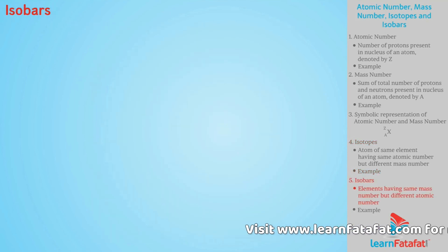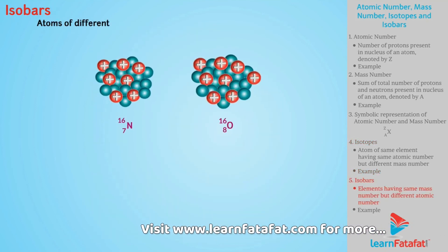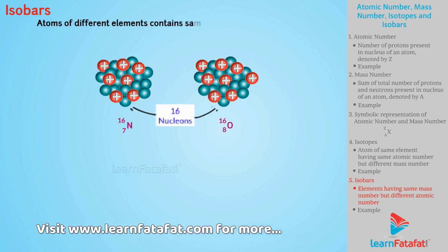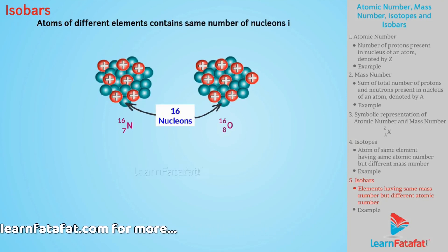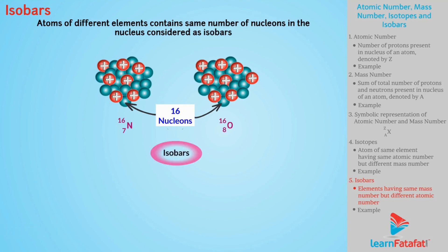Isobars. If atoms of different elements contain same number of nucleons in the nucleus, then they are considered as isobars. Isobars can be defined as elements having same mass number but different atomic number.